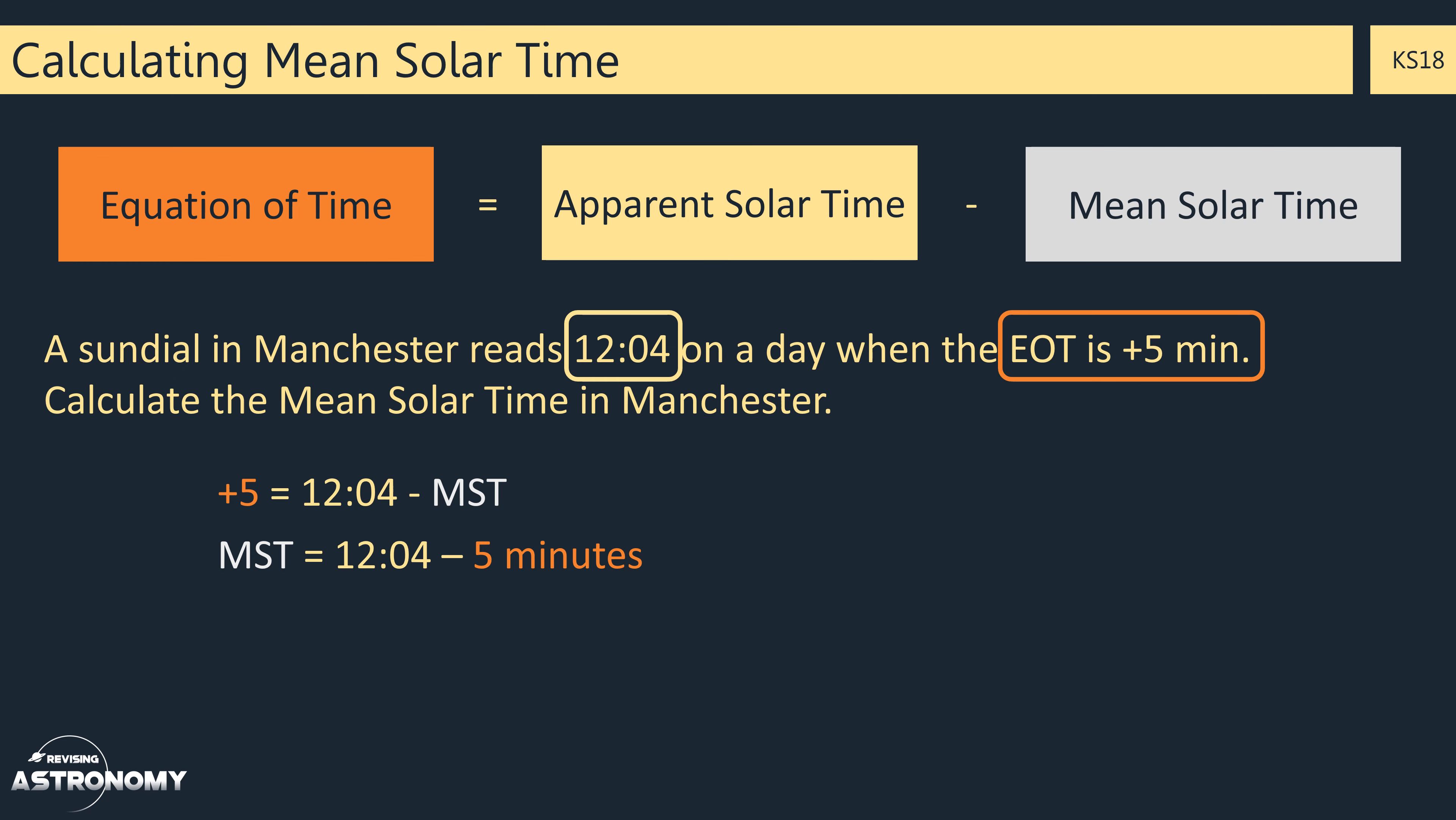So rearranging it gives us the mean solar time is 12:04 minus 5 minutes, which is 11:59. We can see that the sun was fast on this date.